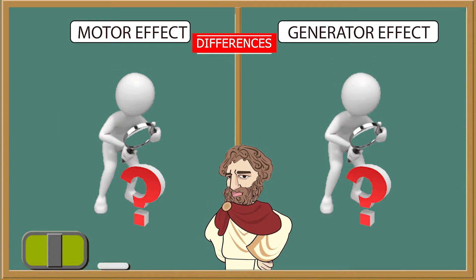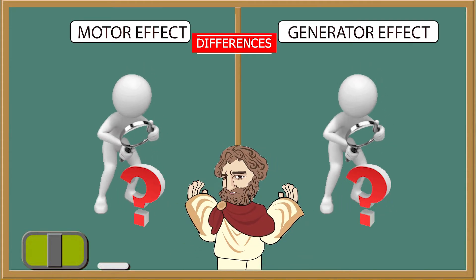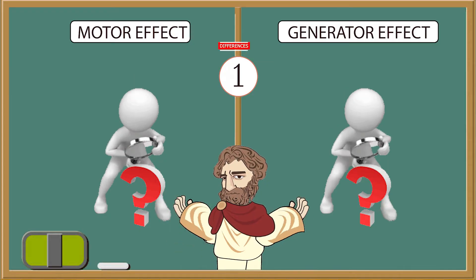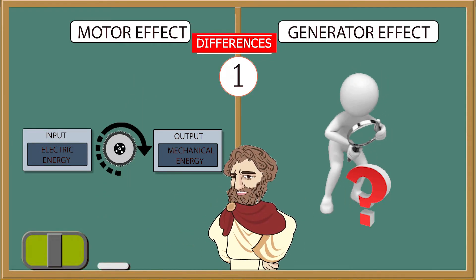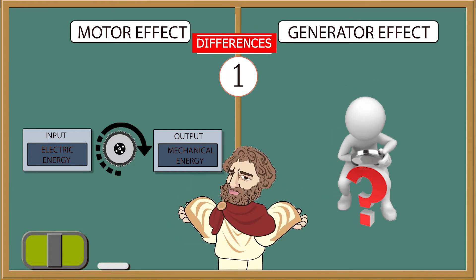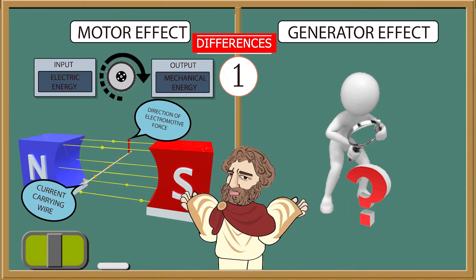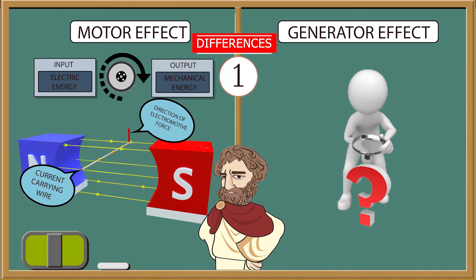As we say, these two effects serve different functions and they have a lot of differences. The key differences are in the case of the motor effect, electric energy is the input and mechanical energy is the output. Let's clarify, when we put a current carrying wire in the magnetic field, this current carrying wire experiences a force.